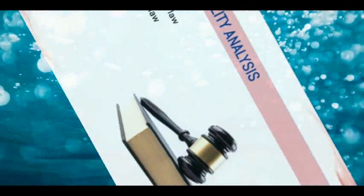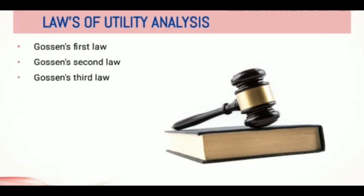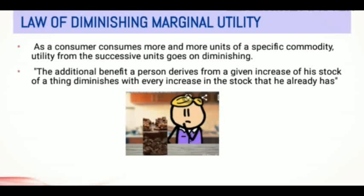Next we move to the laws of utility analysis — Gossen's laws, named after famous economist Herman Heinrich Gossen. Gossen's first law is the law of diminishing marginal utility. Gossen's second law is the law of equi-marginal utility. Gossen's third law explains why marginal utility becomes positive or negative. The law of diminishing marginal utility was proposed by Gossen and popularized by Professor Alfred Marshall. It has wide application — as long as we study and apply economics, there is no escaping from this law.